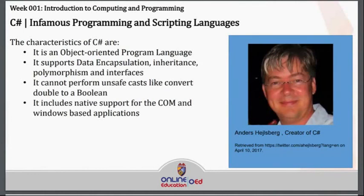We also have C Sharp, which has been developed to improve the functionality of C++, together with Java. It is an object-oriented programming language. It supports data encapsulation, inheritance, polymorphism, and interfaces. It cannot perform unsafe casts like converting double to Boolean. It also includes native support for COM and Windows-based applications. This has been developed by Anders Hejlsberg.